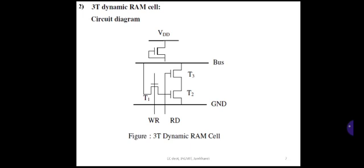The second operation is the read operation. During memory read, we make RD equal to 1 and WR equal to 0, so T3 is turned on and T1 is turned off. Whatever is on the bus line is pulled down to ground through T3 and T2 if 1 is stored. If CG holds a 1, T2 is on, and the bus line is pulled down to ground through T3 and T2.